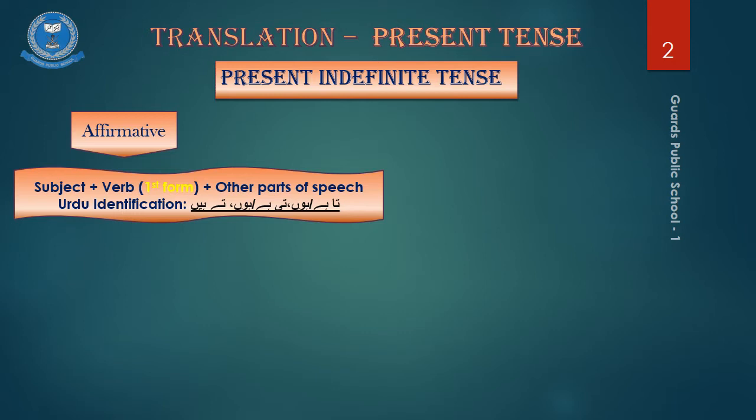For instance, if a sentence ends at these Urdu words that you can see on your screen, we can say that the sentence is of present indefinite tense. For example, as you can see here, the sentence ends at ta hai or ta hoon for masculine, ti hai or ti hoon for feminine, or te hai for plural subjects. We know that the sentence is of present indefinite tense in an affirmative form.